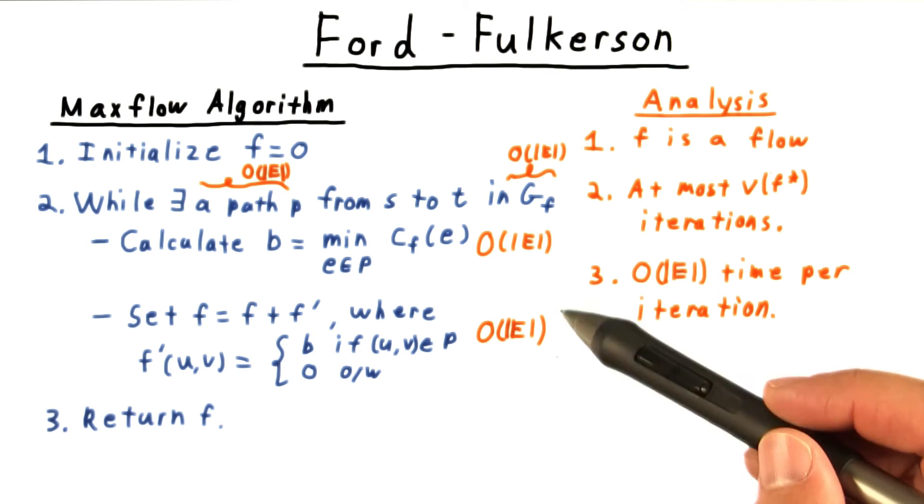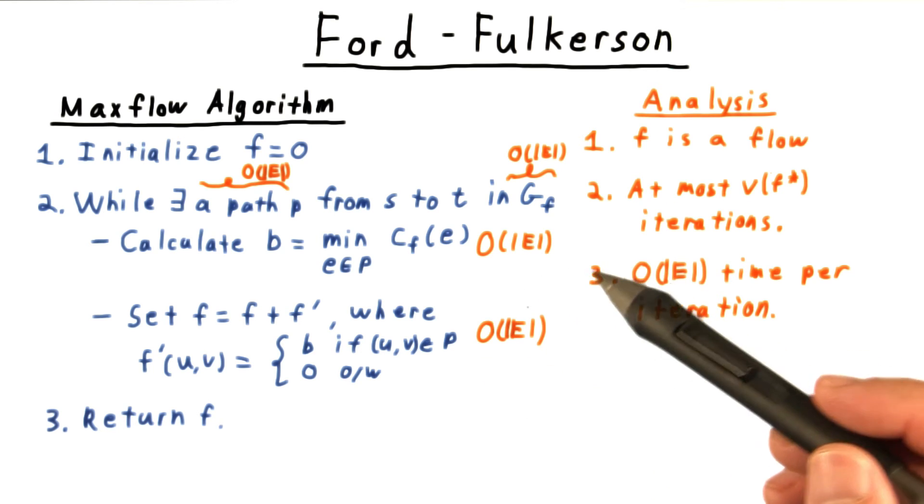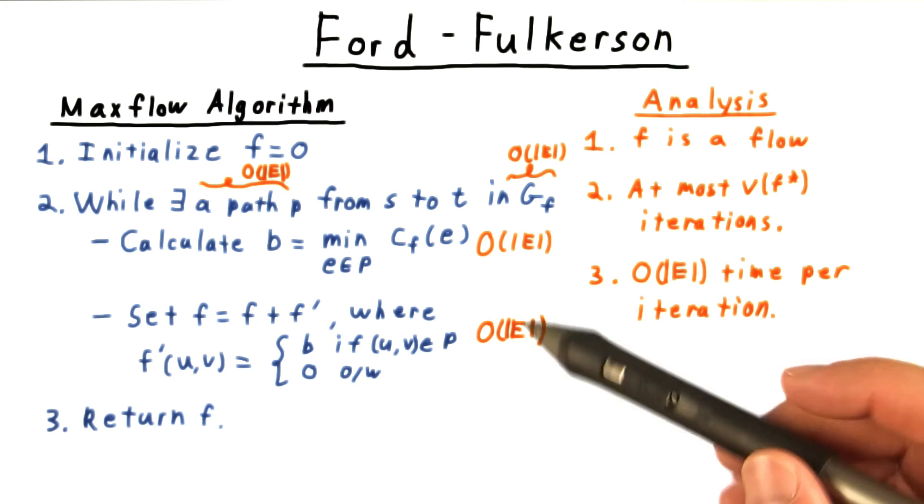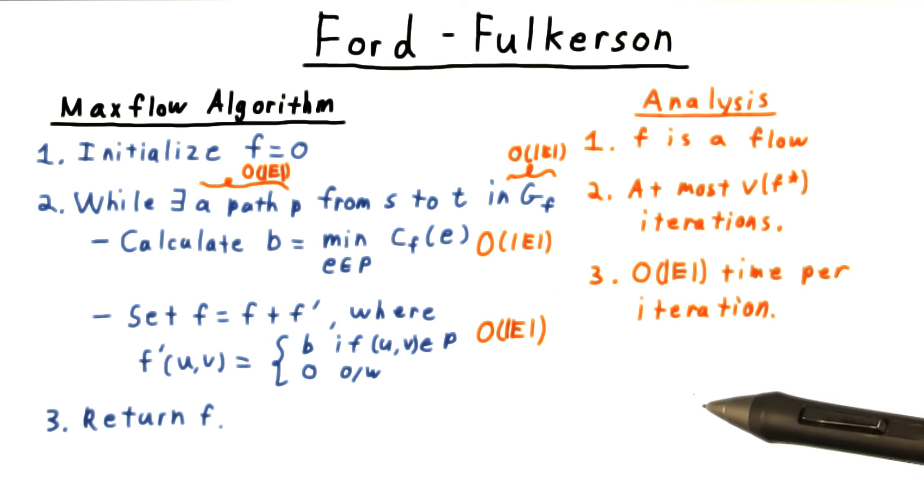And of course, updating the flow requires a constant amount of arithmetic per edge. So all in all, we just have order E time for each iteration, that is, time proportional to the number of edges.